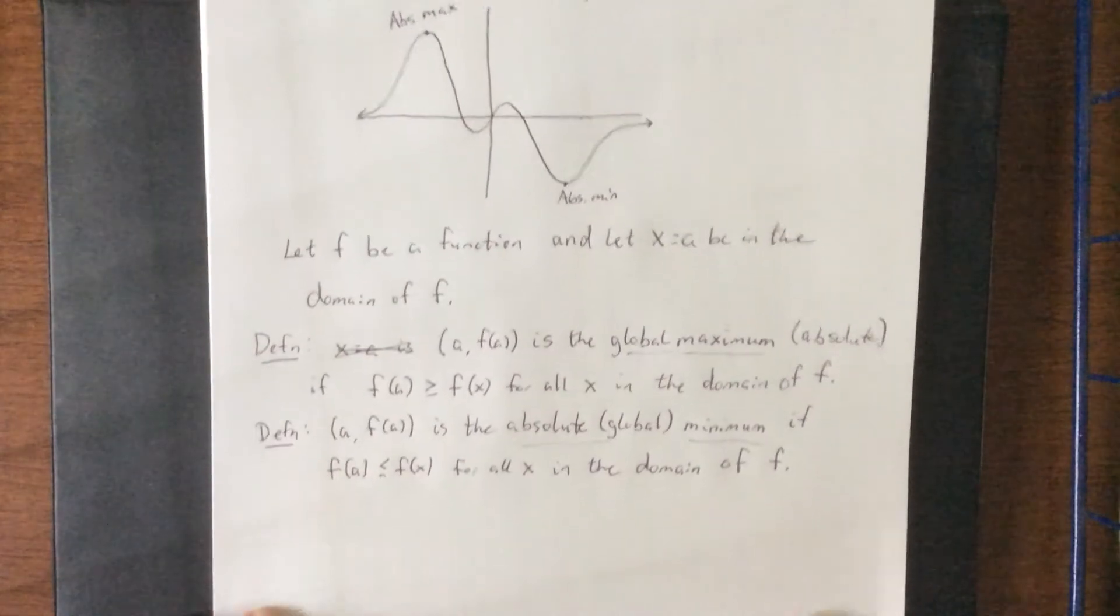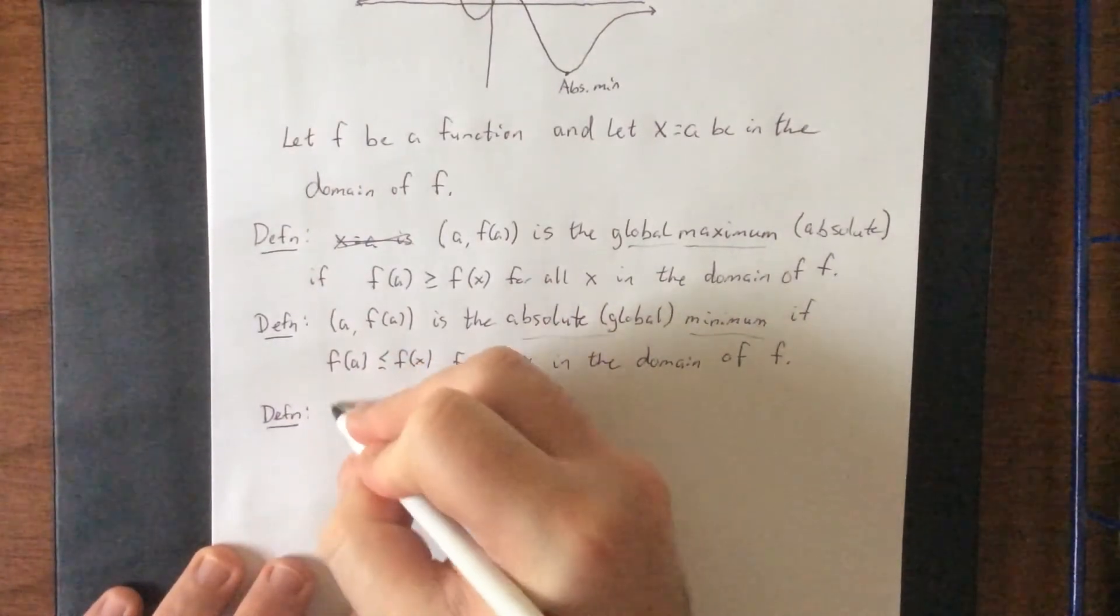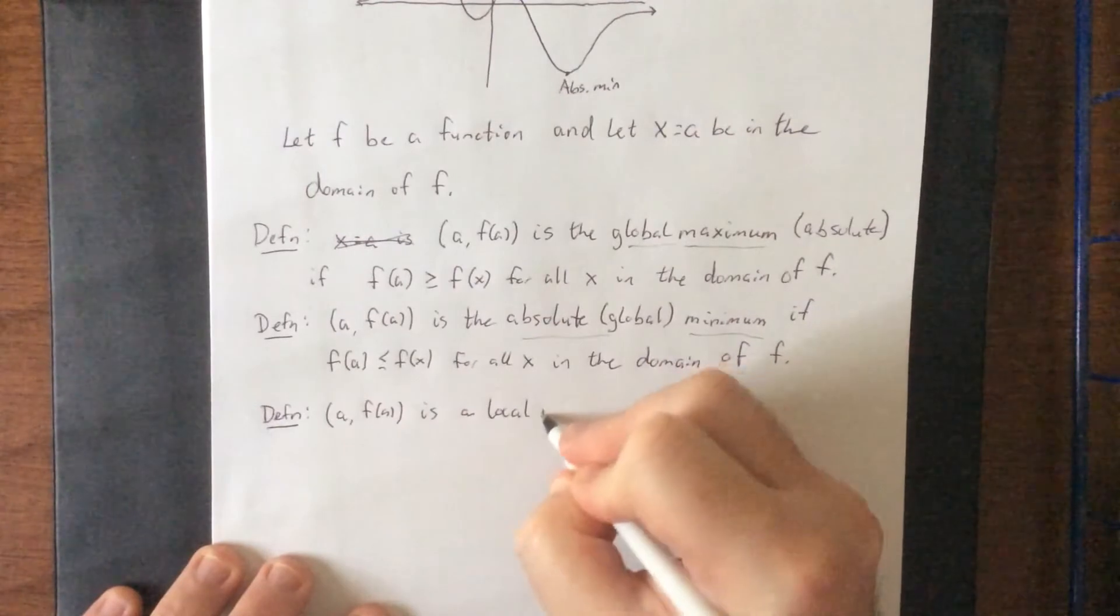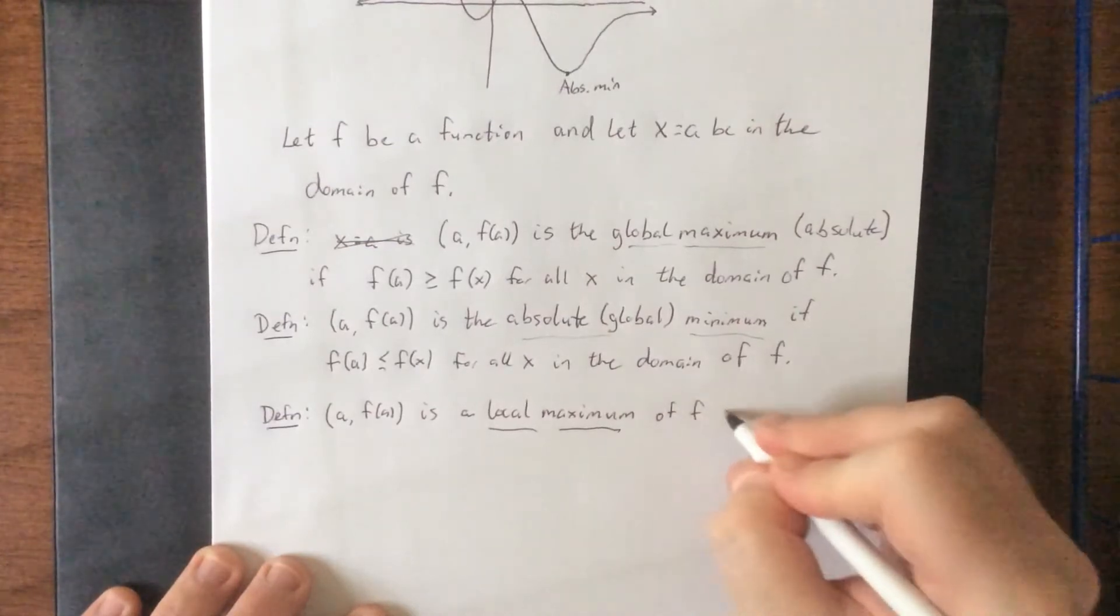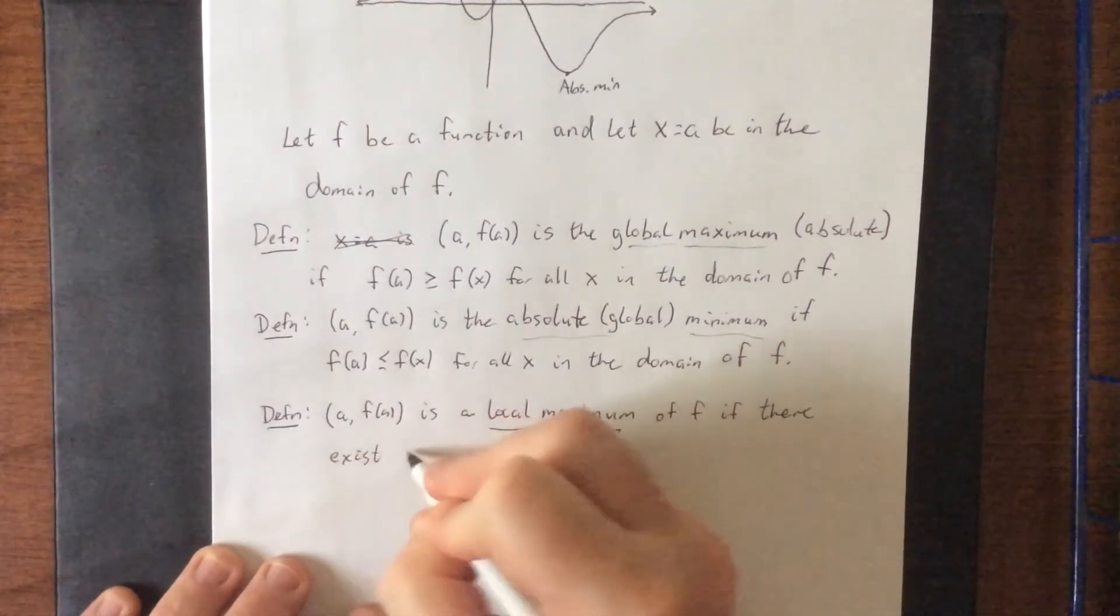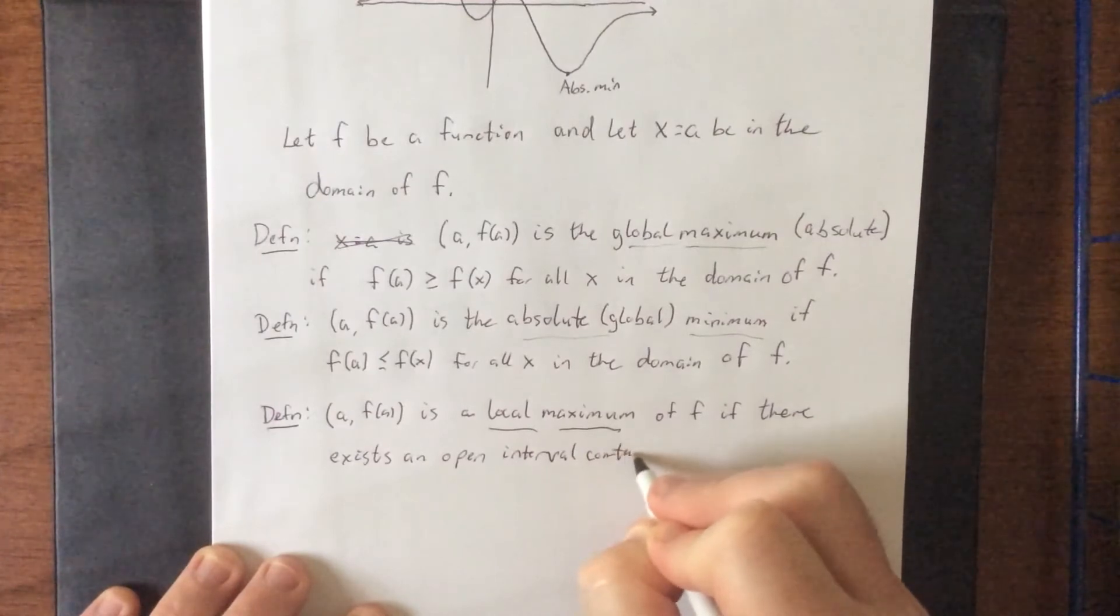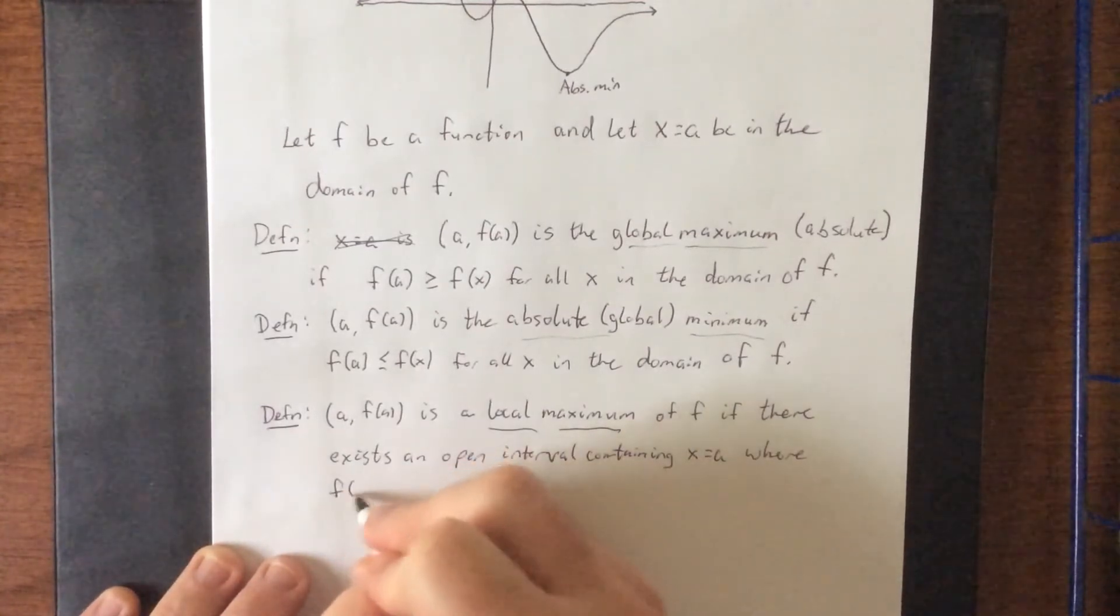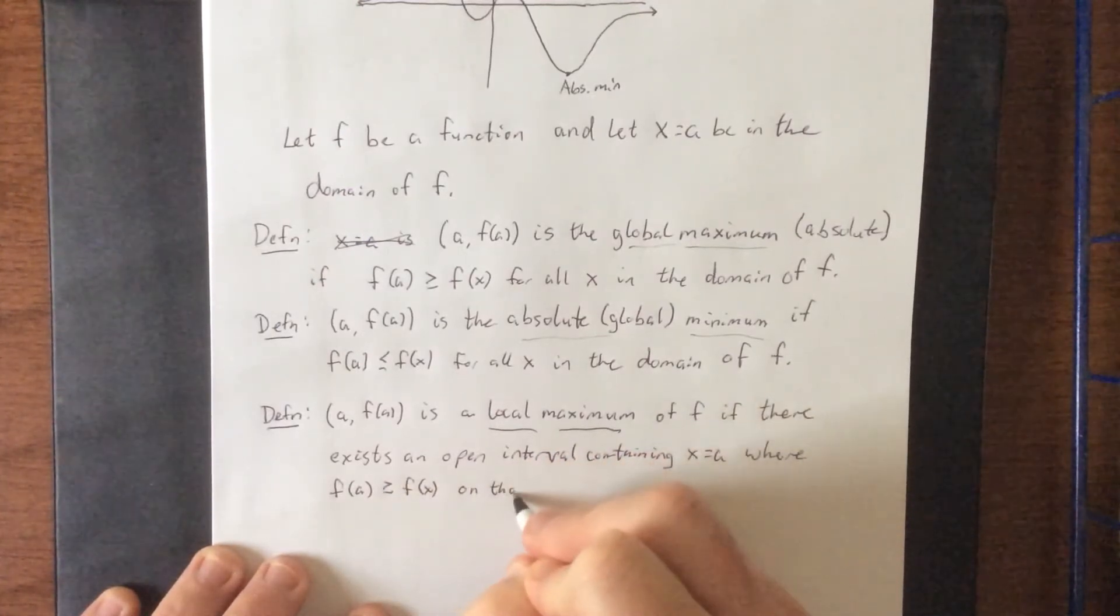Now this is as opposed to the concept of a local maximum or minimum. That's also referred to as a relative. So a comma f of a is a local maximum of f if there exists an open interval containing x equals a, where f of a is greater than or equal to f of x just on that interval.